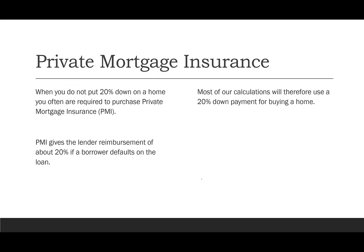When you put less than 20% down on a home loan, you're often required to purchase private mortgage insurance, abbreviated PMI. PMI gives the lender reimbursement — about 20% — if a borrower defaults on the loan. Because PMI is such a big deal, most of our calculations will use 20% down. There are different loan types that can avoid PMI, but always ask your lender.